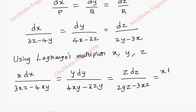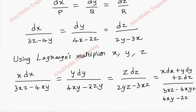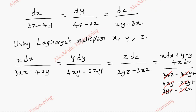Using the ratio property, we add all the numerators: x dx plus y dy plus z dz, over the sum of all denominators: 3xz minus 4xy plus 4xy minus 2zy plus 2yz minus 3xz. The terms cancel — 3xz minus 3xz, 4xy minus 4xy, and 2zy minus 2yz — leaving the denominator equal to 0.